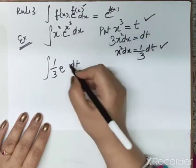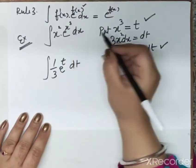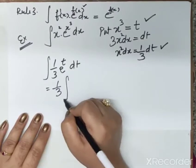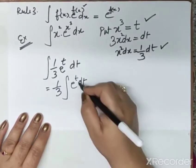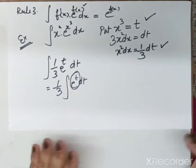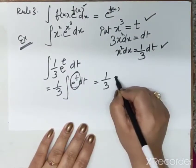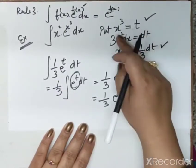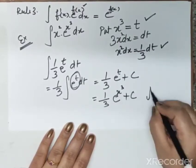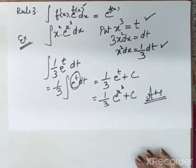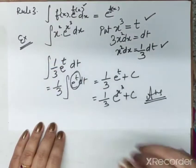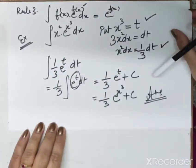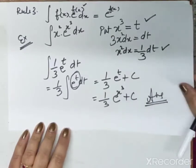Now take the integration: (1/3) ∫ e^t dt. The integration of e^t is e^t itself, so the answer is (1/3) e^t + c. Substituting back, t = x³, so the final answer is (1/3) e^(x³) + c. This is the third form: if the question comes in this form, we apply integration by substitution Rule 3.